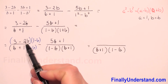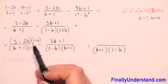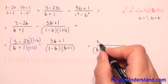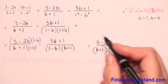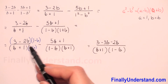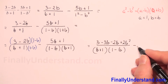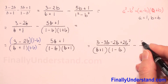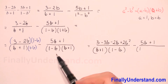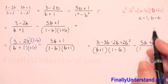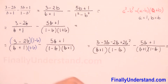Now we do the multiplication in the numerator. We multiply 3 minus 2b times 1 minus b: 3 times 1 is 3, 3 times negative b is negative 3b, negative 2b times 1 is negative 2b, and negative 2b times negative b is positive 2b squared. The denominator is b plus 1 times 1 minus b, and we subtract the second fraction 5b plus 1 over the same denominator.